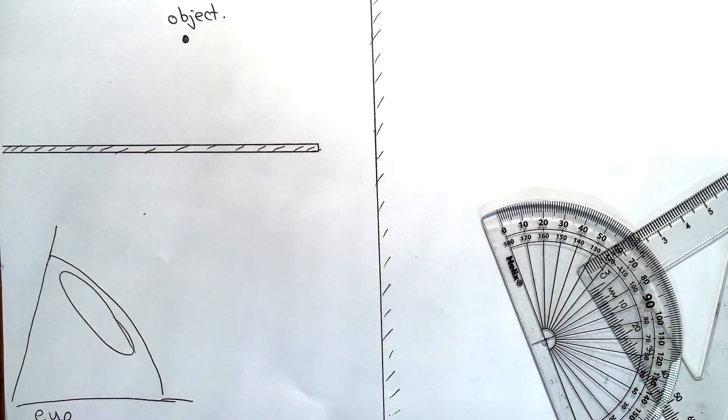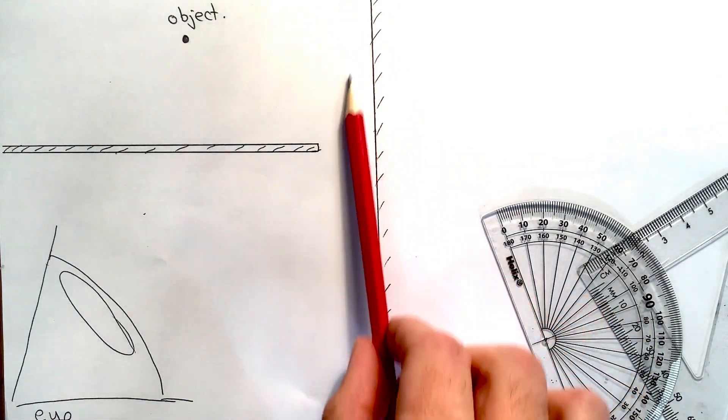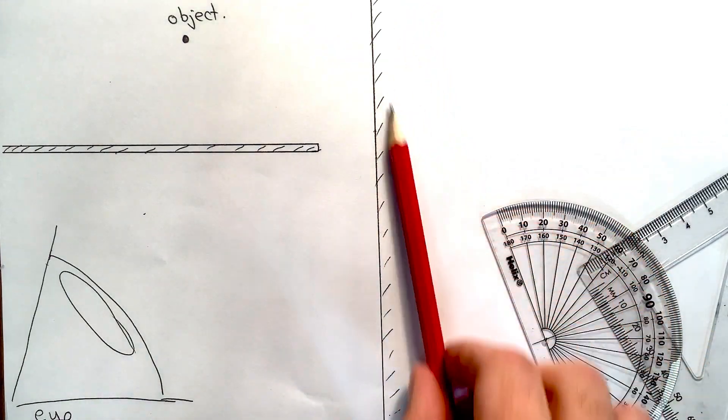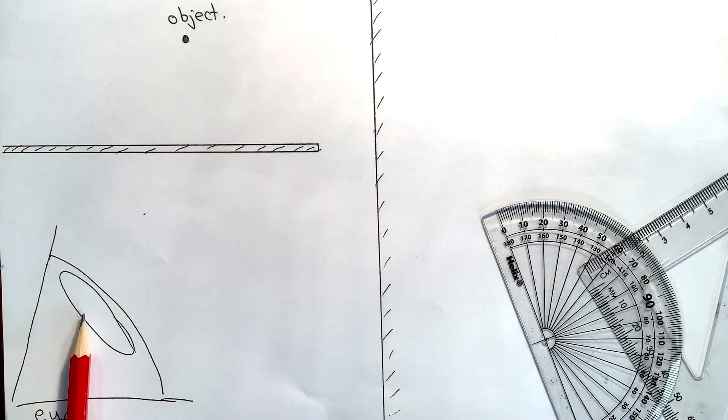To show what's already drawn on my diagram, I've got the mirror here and it would be the shiny side on this side and the back of the mirror here. I've got something blocking which shows no light can come directly from the object to the eye. I've got my eye drawn here and my object drawn here.